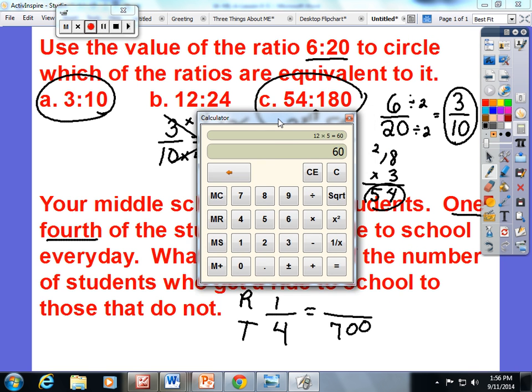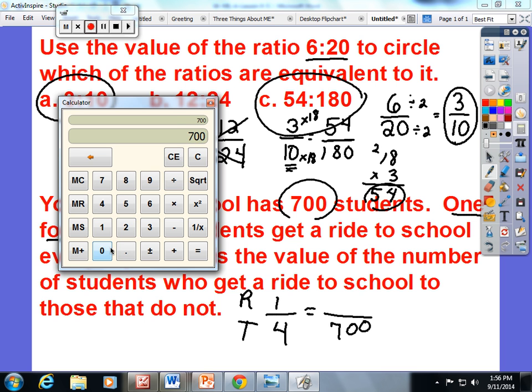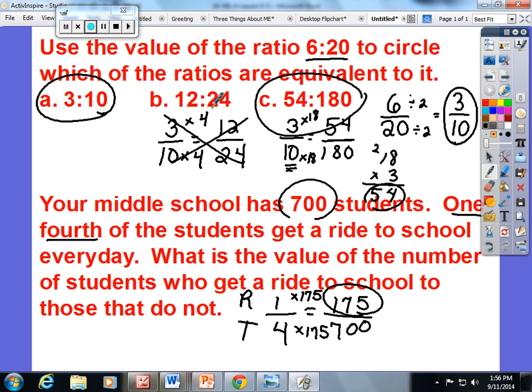I'm going to divide 700 by 4. 4 times 175 gives you 700, so whatever you do to the bottom you must do to the top. So for every 700 students at the school, 175 get a ride.